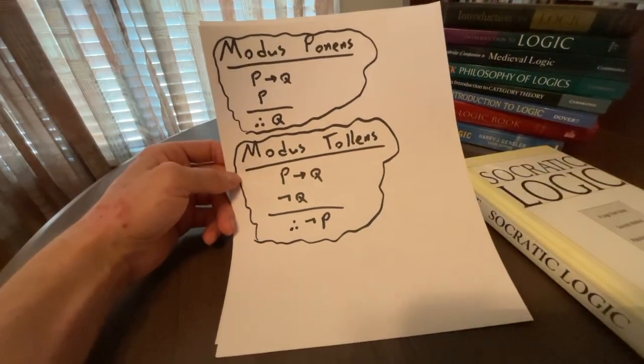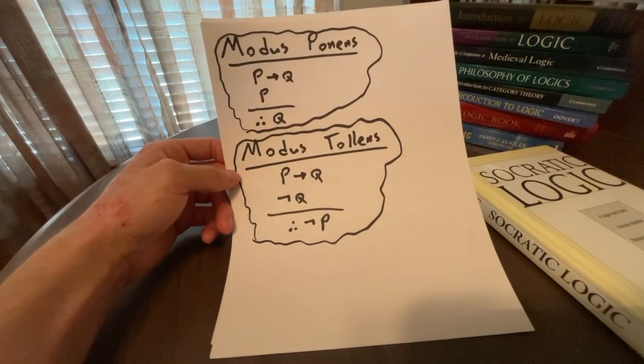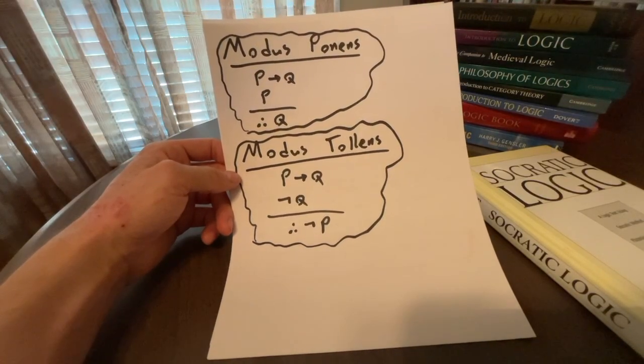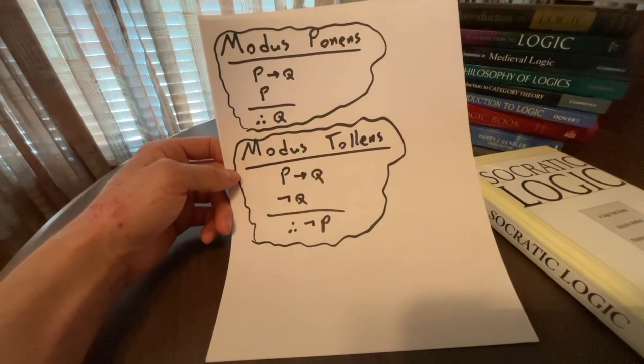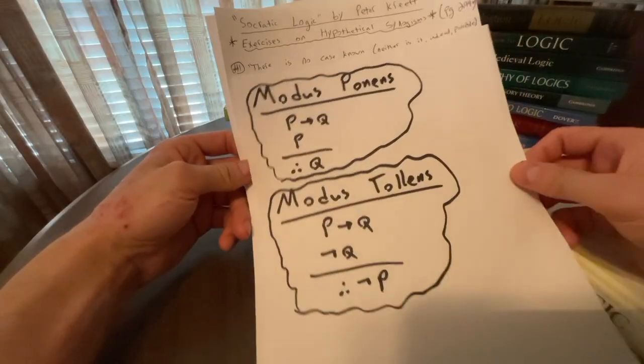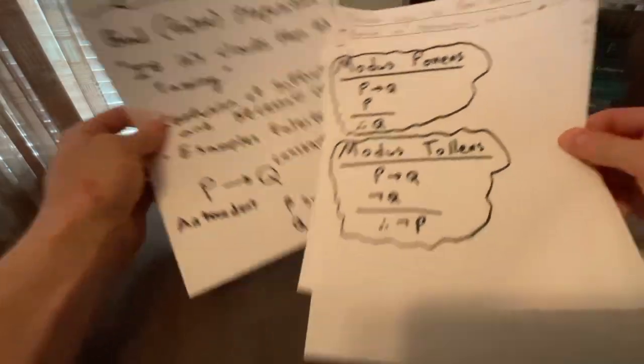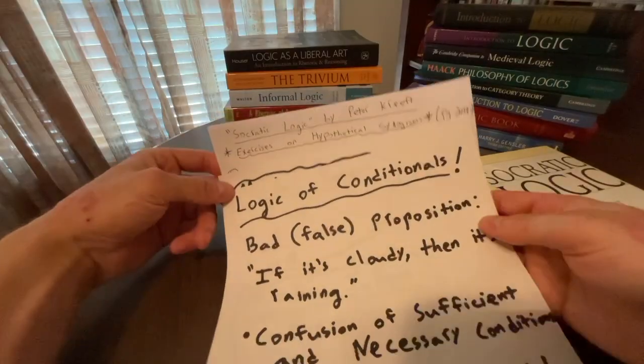Then we have modus tollens, if P, then Q, not Q, therefore not P. Q is necessary for P. So if Q is not the case, then P cannot be the case because Q is necessary. Q is necessary for P. So we have modus ponens and modus tollens. And those are the two good inferences when we're thinking about the logic of conditionals.